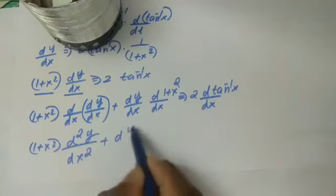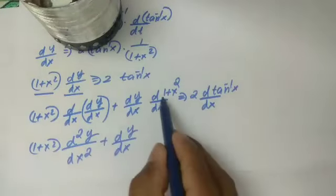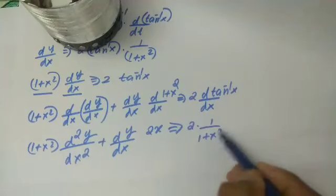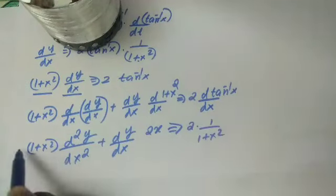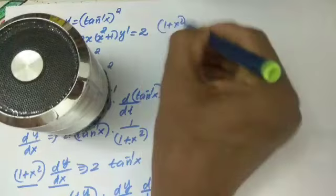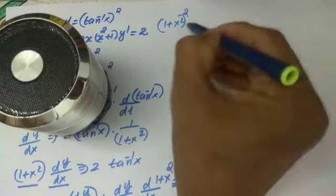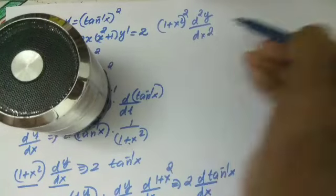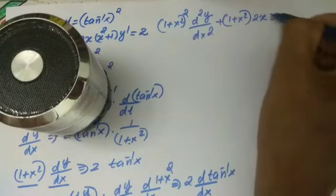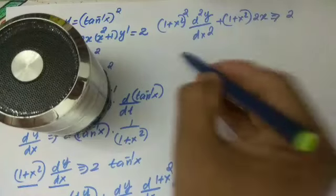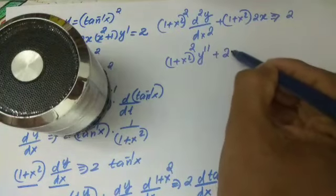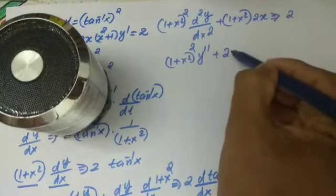So 1 plus x square into d square y by dx square plus dy by dx into 2x equal to 2 by 1 plus x square. Multiplying throughout by 1 plus x square: 1 plus x square all square into d square y by dx square plus 1 plus x square into 2x equals 2. So 1 plus x square all square y double prime plus 2x into 1 plus x square y prime equals 2.